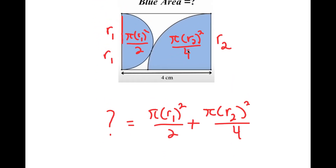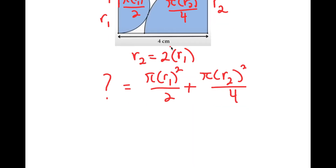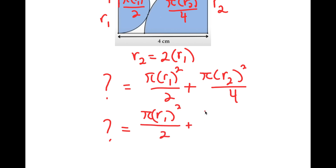So how am I going to do this? Well, R sub 2 we know is equal to 2 times R sub 1, because R sub 1 is half the entire side length, and R sub 2 is the total side length. Now that we know this, I'm going to plug in over here.